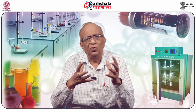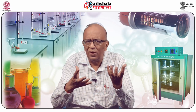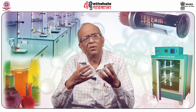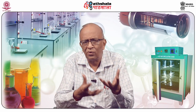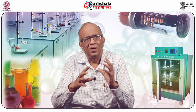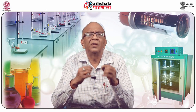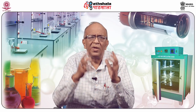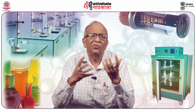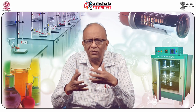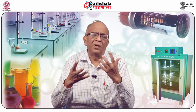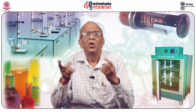In gravimetric analysis, a solution is given and we are asked to find out the concentration of the sample — the amount of that substance dissolved in the solution. This is determined by taking the weight of that substance. For that purpose, we usually add a precipitant — a substance with which the dissolved analyte forms a precipitate — and then we take its weight.